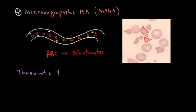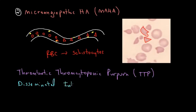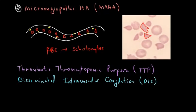Two of the major causes of MAHA also have long names: thrombotic thrombocytopenic purpura, or TTP, and disseminated intravascular coagulation, or DIC.